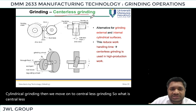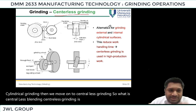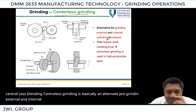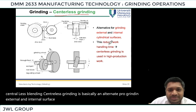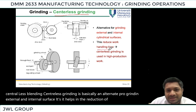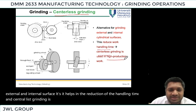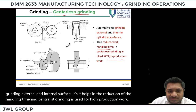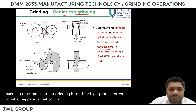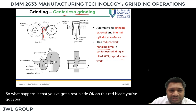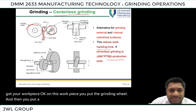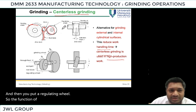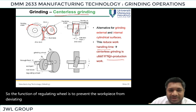Moving on to centerless grinding: centerless grinding is basically an alternative for grinding external and internal surfaces. It helps in the reduction of handling time and is used for high production work. You have a rest blade, on which the work piece sits, then you place the grinding wheel and a regulating wheel. The function of the regulating wheel is to prevent the work piece from deviating or changing its course.